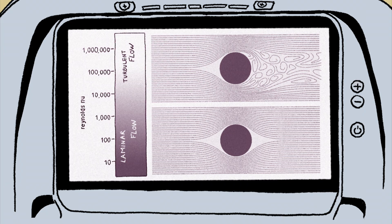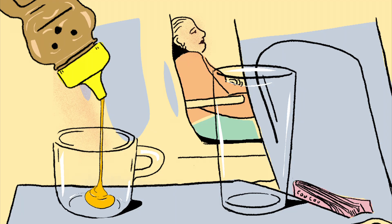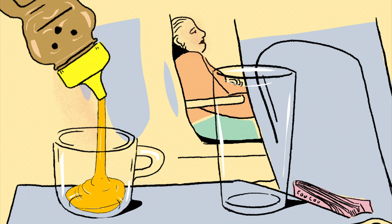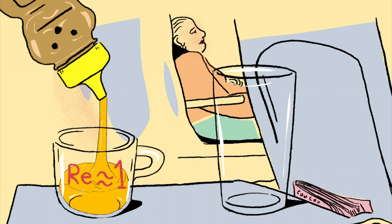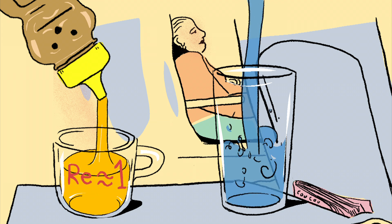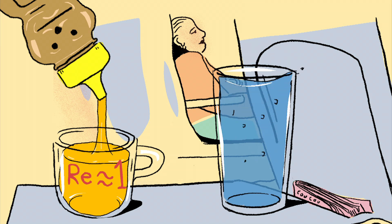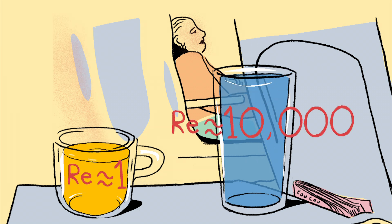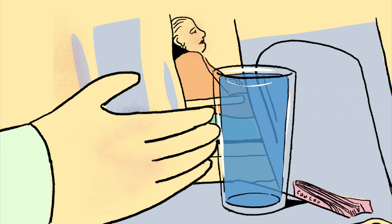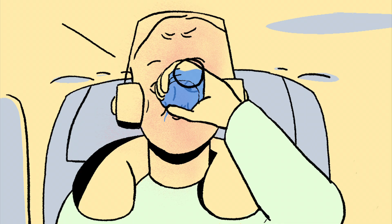Honey being poured into a cup, for example, has a Reynolds number of about 1. The same setup with water has a Reynolds number that's closer to 10,000. The Reynolds number is useful for understanding simple scenarios, but it's ineffective in many situations.